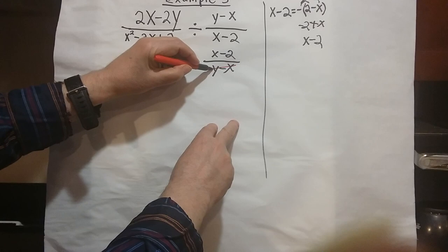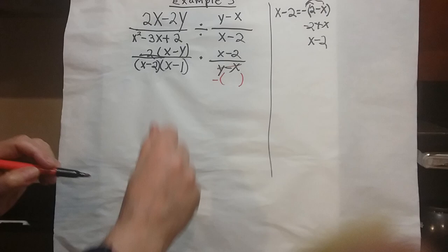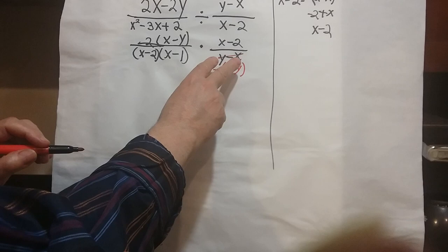And to do that, we're going to cross it out, put a negative parenthesis, and reverse the y minus x to x minus y. Okay, these are the same because of what I explained over here.